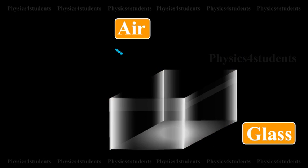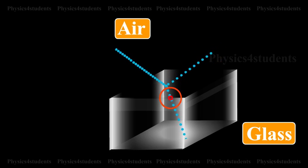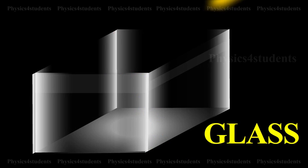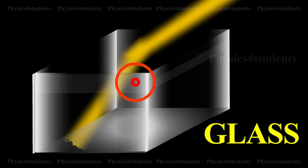When the corpuscles approach a surface between two media, they are either attracted or repelled. Reflection of the particles is due to repulsion and refraction is due to attraction. According to this theory, the velocity of light in the denser medium is greater than the velocity of light in a rarer medium.